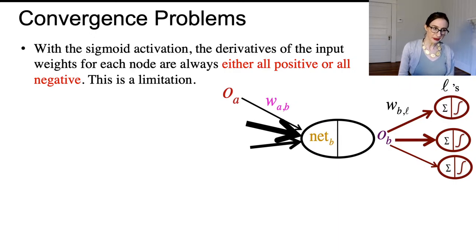Another problem is that if you use the sigmoid activation function in particular, the derivatives of the input weights for each node are either all positive or all negative, and this is a problem. Let's think about the gradient for all of the inputs into node B, w_ab for all a, and as it turns out the derivatives of them all have the same sign.